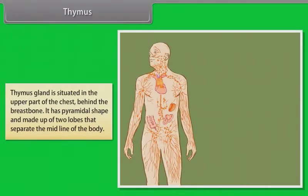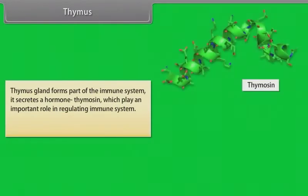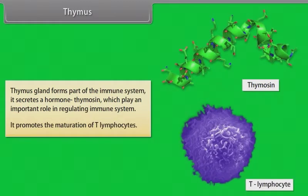The thymus gland is situated in the upper part of the chest behind the breast bone. It has a pyramidal shape and is made up of two lobes that meet at the midline of the body. The thymus gland forms part of the immune system. It secretes a hormone, thymocin, which plays an important role in regulating the immune system and promotes the maturation of T-lymphocytes.